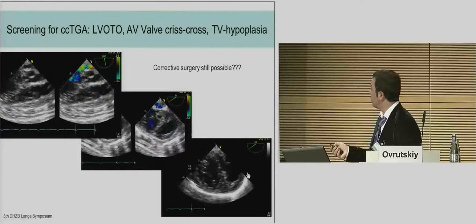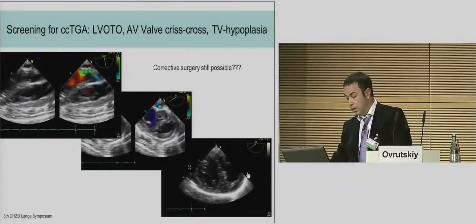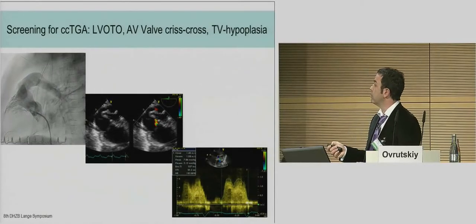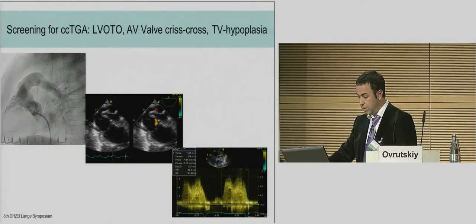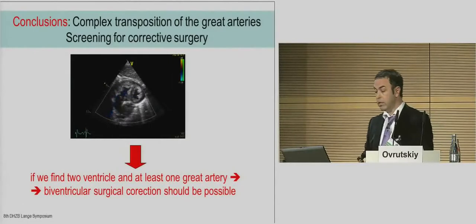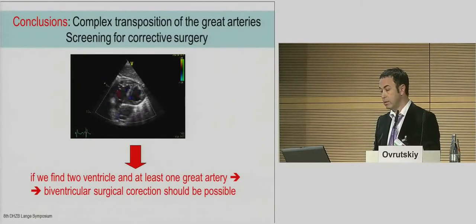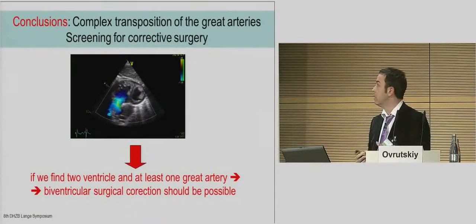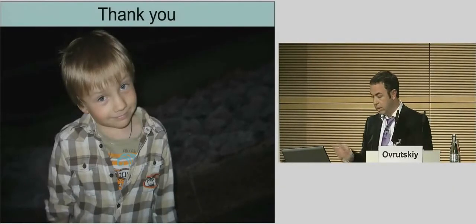You can recognize here the mitral valve, and 90 degrees to the mitral valve, the position of the tricuspid valve. Is corrective surgery still possible? If you look at these pictures, I would say yes: this is a small right ventricle now pumping into the pulmonary arteries — this is the staging operation — and there is mild stenosis of the tricuspid valve. But the clinical condition of the patient is very good. Therefore, I would conclude that in screening for corrective surgery, we should know all that we can find about the anatomy of the ventricles and great arteries. My impression is that if we find two ventricles and at least one great artery, biventricular surgical correction should be possible.